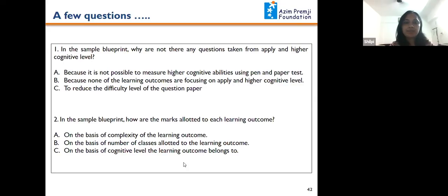Most of you have answered the first question correctly. The question was in the sample blueprint, why aren't there any questions taken from apply and higher cognitive level? The answer is very simple because none of the learning outcomes are focusing on apply and higher cognitive level.